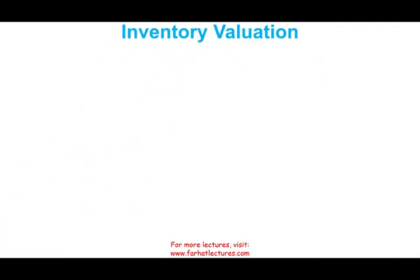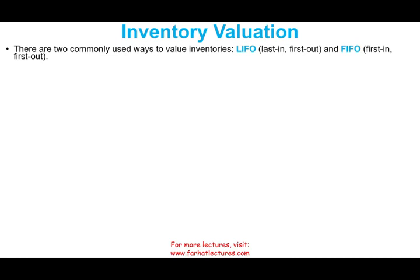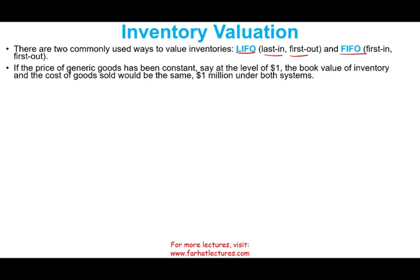Starting with inventory valuation, we have two commonly used methods: LIFO, which stands for last in first out, and FIFO, first in first out. We also have specific identification and weighted average, and each one has pros and cons. Simply put, if the price of goods has been constant, say $1, the book value of inventory will be the same whether you use FIFO, LIFO, or any other method. But in the real world, prices go up and down.